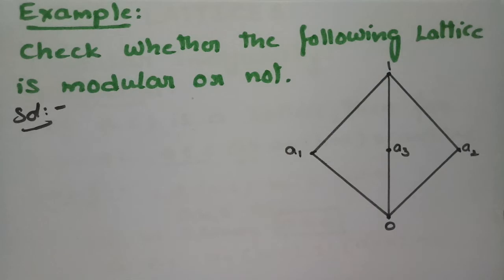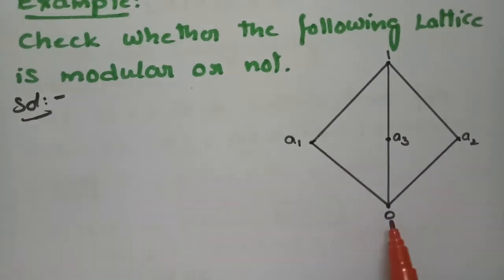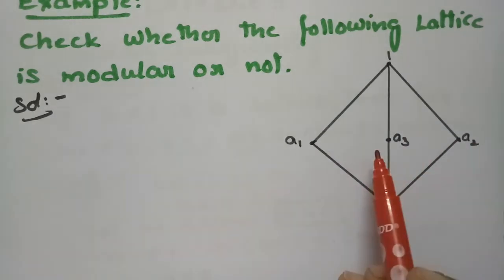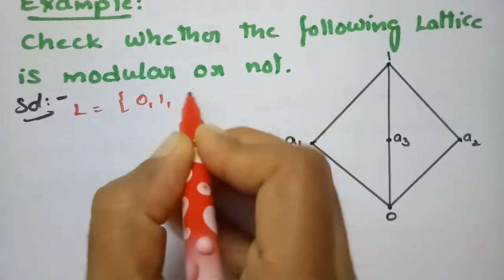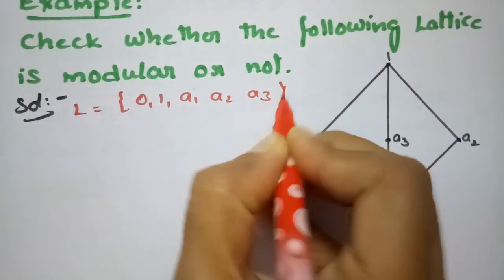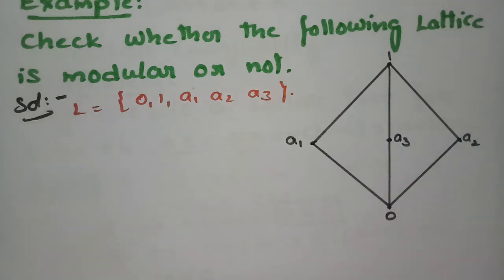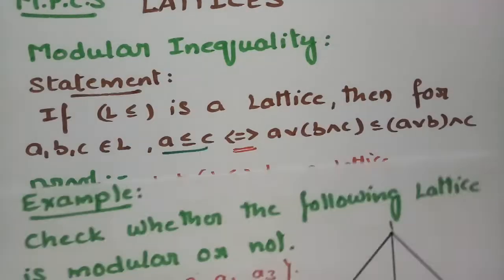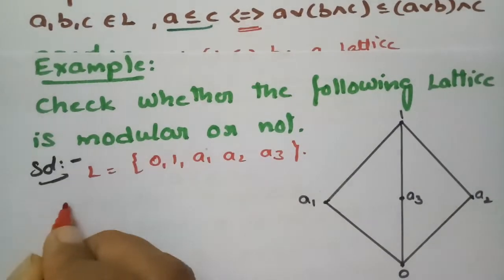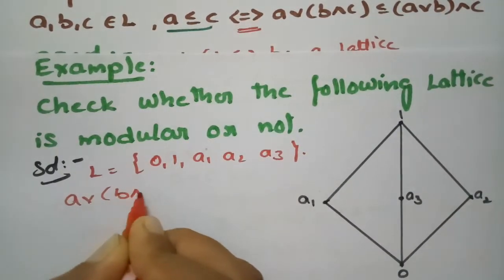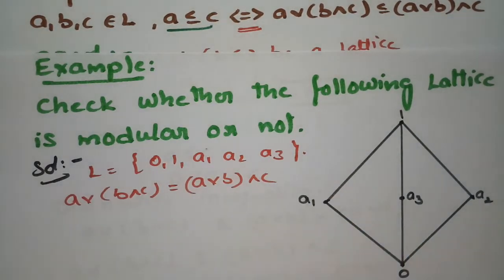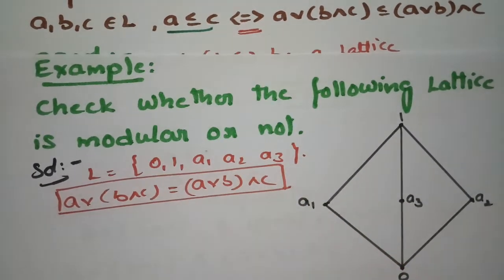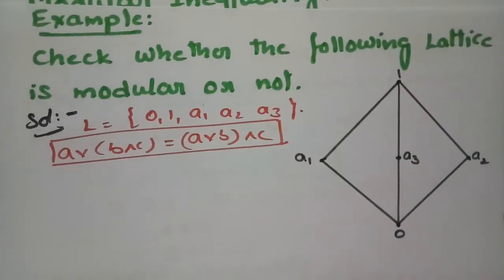In this lattice the elements are clearly 0, 1, a1, a2, and a3. We have to check whether it is a modular lattice or not. According to the modular property, we have to prove A∨(B∧C) = (A∨B)∧C. This relation should be satisfied in order to show that it is a modular lattice.